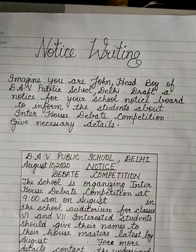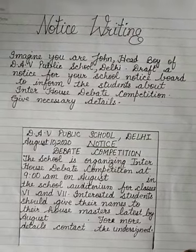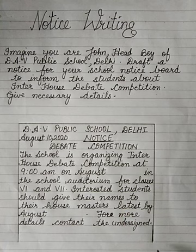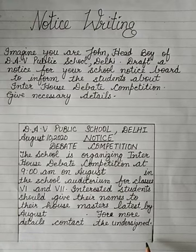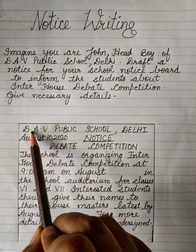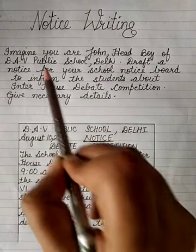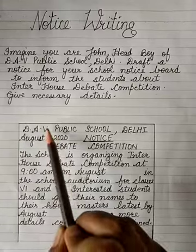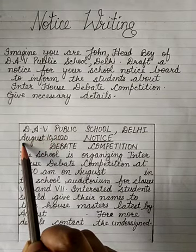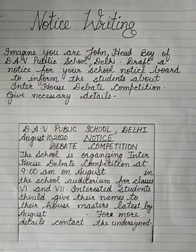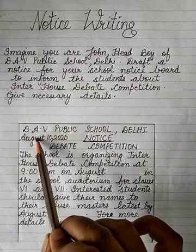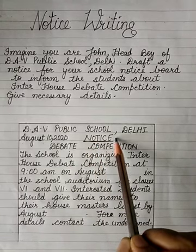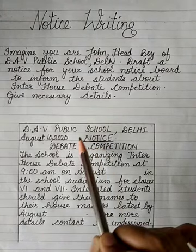First, draw the box using a pencil. I have not closed the box yet — I'll close it only when the notice ends. In the very first line, write the name of the school and city: DAV PUBLIC SCHOOL, DELHI — in all capital block letters. In the second line, on the left side write the date. Today it is August 10, 2020. Then in the center of the same line, write NOTICE and underline it — again in block letters.